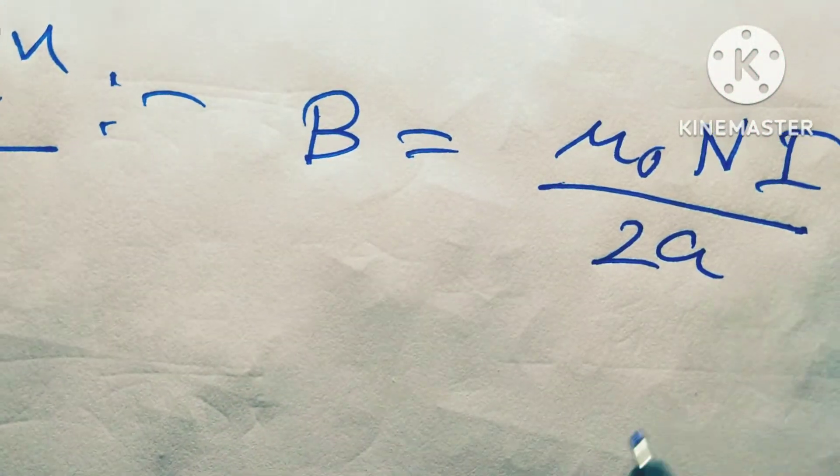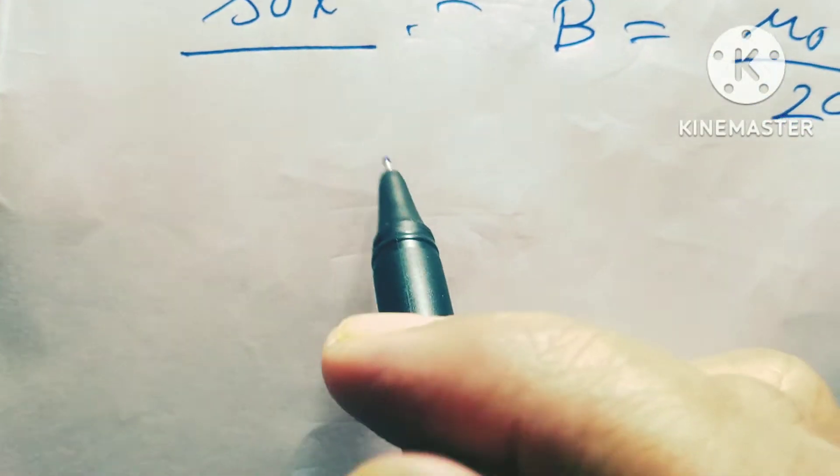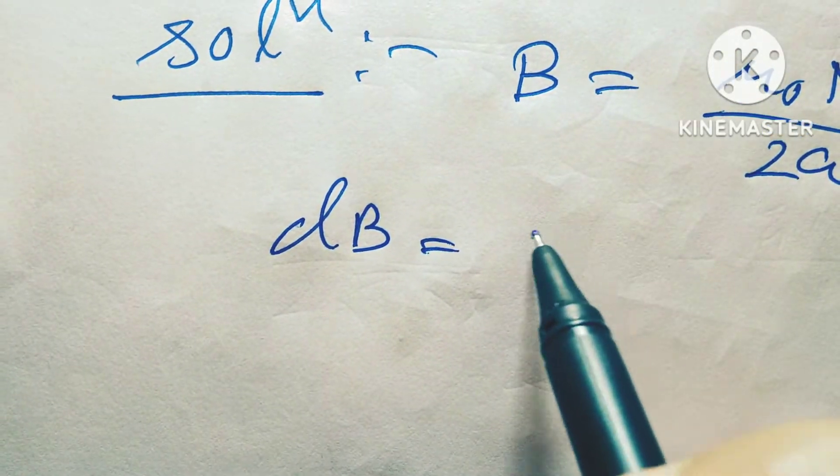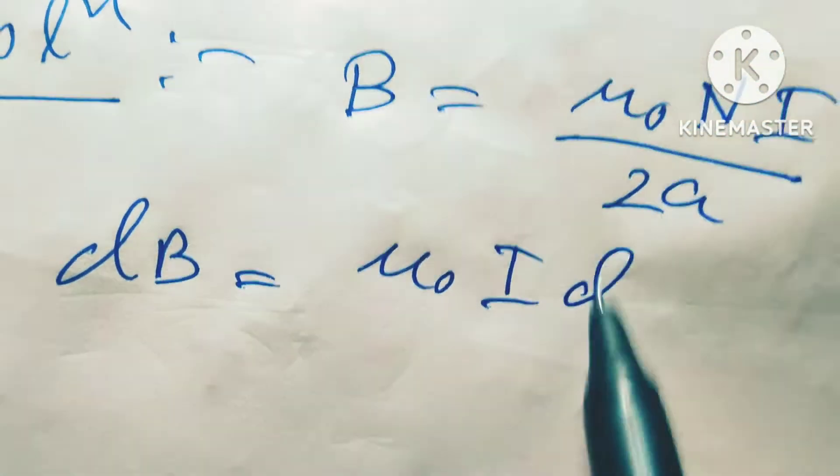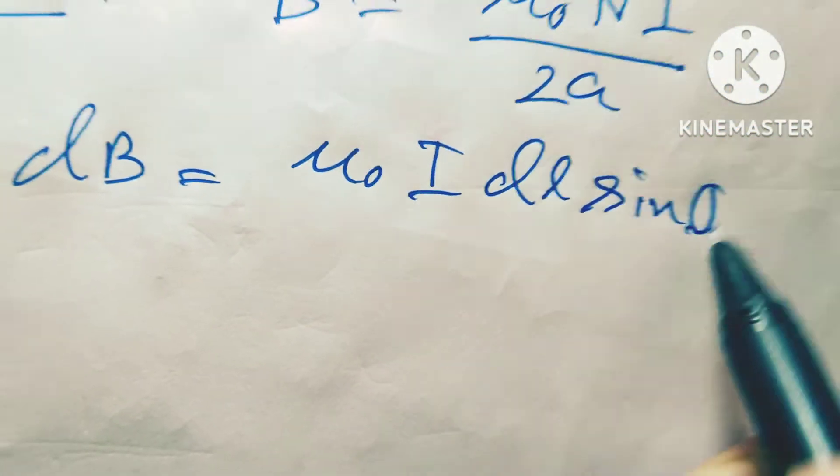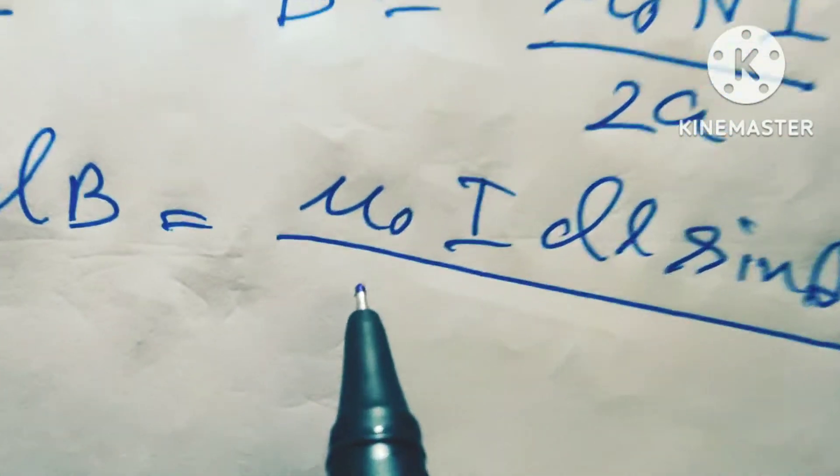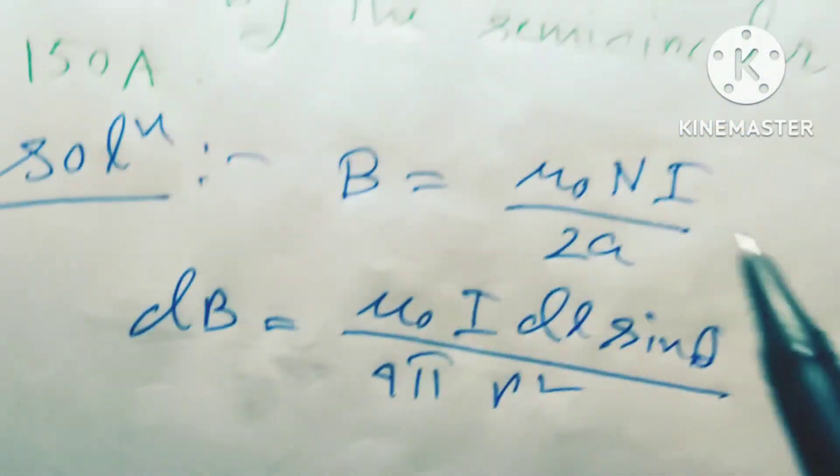So friends, how to solve this problem? Differential dB is equal to what we learned: dB is equal to μ₀ i dl sin theta divided by 4π r square.